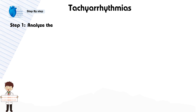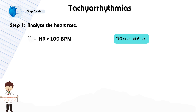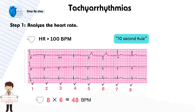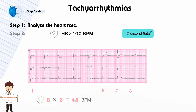Step 1: Analyze the heart rate. Tachyarrhythmias are characterized by a heart rate greater than 100 beats per minute. To calculate this, you can use the 10-second rule or the 300 rule. For instance, if you count 8 QRS complexes in a 10-second period, you would multiply 8 by 6 to determine a heart rate of 48 beats per minute, which is within the normal range.